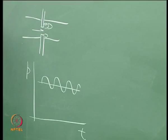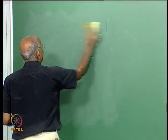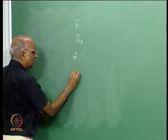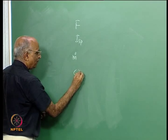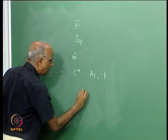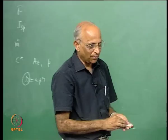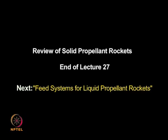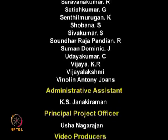This concludes our discussion of solid propellant rockets. A good exercise is: given thrust and specific impulse, find mass flow rate; use c* to find throat area A_t and chamber pressure p; then use r = A × p^n to find burn rate and solve the problem. About 10 problems have been assigned. We have finished the portion on solid propellant rockets. In the next class, we will start with liquid propellant rockets. Thank you very much.